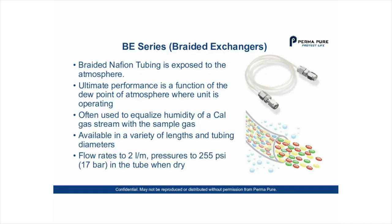Let's look at our products, starting with the BE series — a braided exchanger using braided Nafion tubing exposed to the atmosphere. Ultimate performance is a function of the dew point of the atmosphere where the unit is operating. It is often used to equalize humidity of the calibration gas stream with the sample gas. It's available in a wide range of lengths and tubing diameters, with flow rates up to 2 liters per minute and pressures to 255 psi in the tube when dry. It essentially equates the humidity of the gas stream going through the center of the tube with whatever is outside the tube.